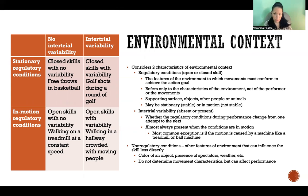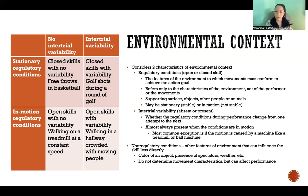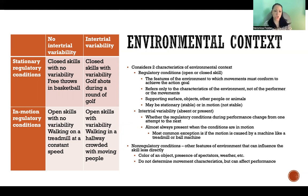Just like discussed in the previous video, conditions could be stationary — meaning not in motion — or in motion. Then for inter-trial variability, it's either present or not: there is variability from one execution to the next, or there is consistency. This refers to whether the regulatory conditions during performance change from one attempt to the next — whether the environment is changing. It is almost always present when the conditions are in motion.